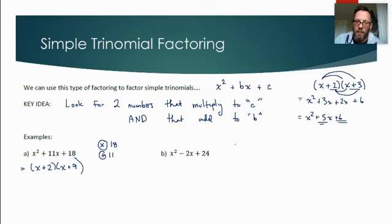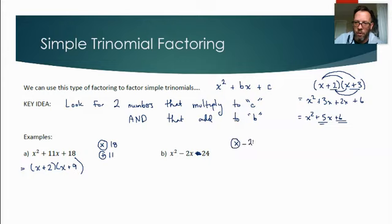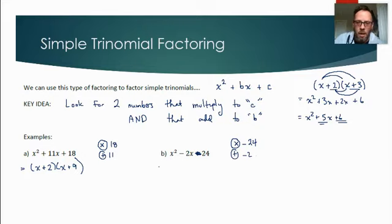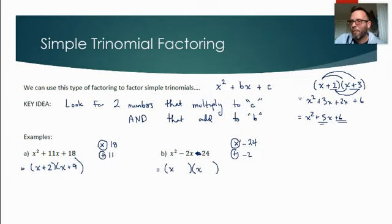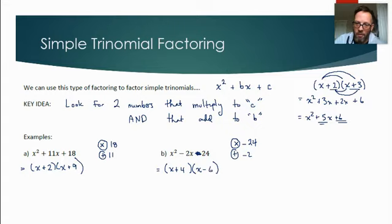For the next one, we're looking for numbers that multiply to negative 24 and add to negative 2. I'll fix the lesson sheet on that. If they multiply to a negative, one number must be positive and one negative. Playing that numbers game: what numbers multiply to 24 and differ by 2? After some consideration, 4 and negative 6 multiply to negative 24 and add to negative 2. Simple trinomial factoring — ideally this is automatic.